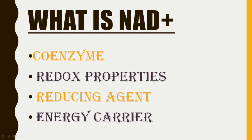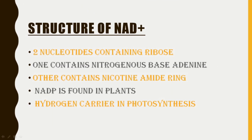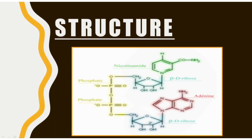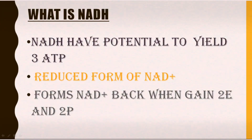The fourth point is that, like ATP, it is also an energy carrier molecule because it carries hydrogen, electrons, and protons — which we will cover later in the video. Coming to the structure of NADH, it has two nucleotides containing ribose sugar. One contains the nitrogenous base adenine and the other ribose sugar contains nicotinamide. There is also another molecule in plant cells known as NADPH, which acts as a hydrogen carrier in photosynthesis. Dinucleotide means it has two nucleotides; both contain a phosphate group and a ribose sugar, but one contains nicotinamide and the other contains adenine.